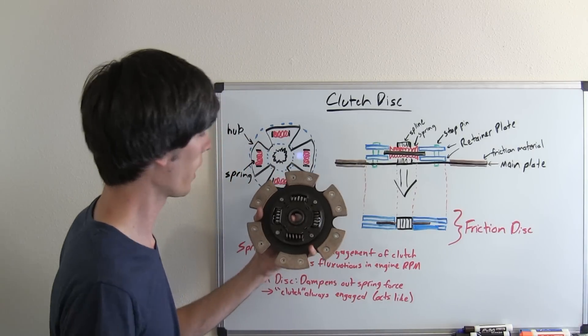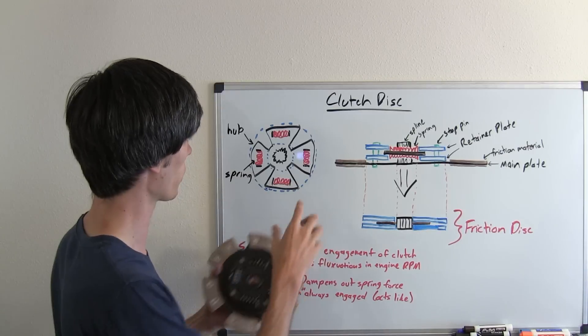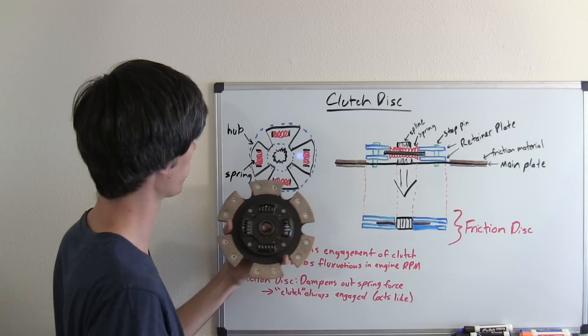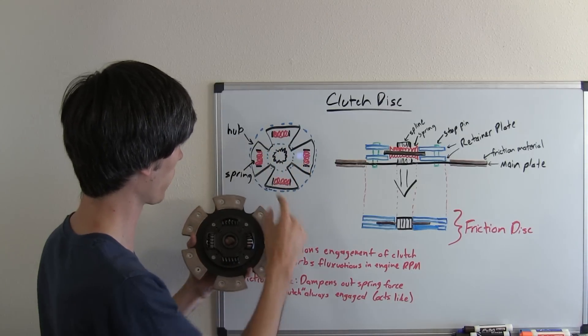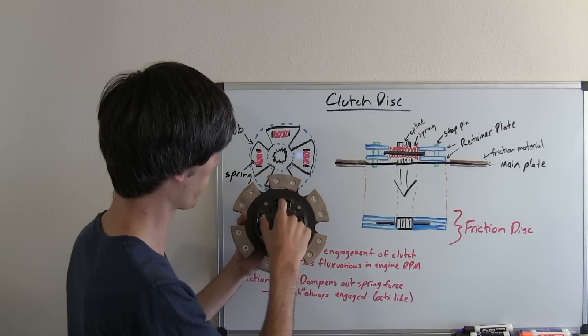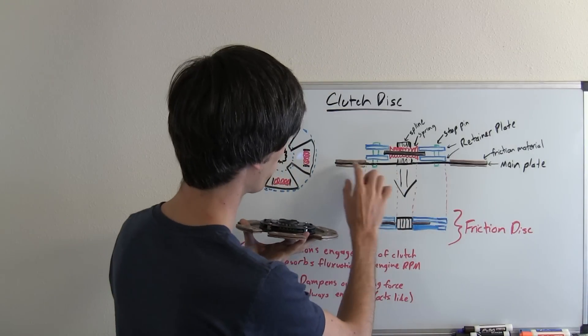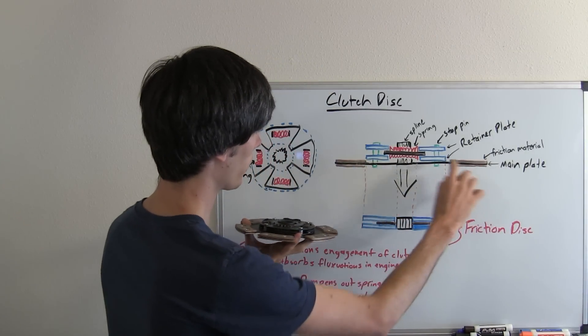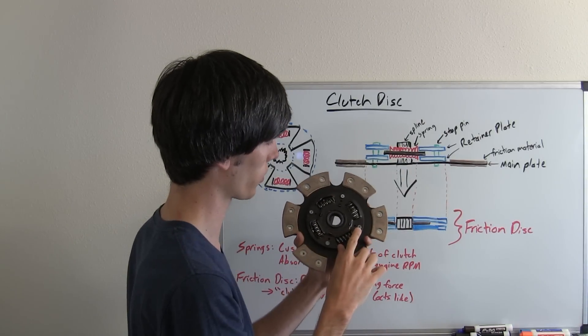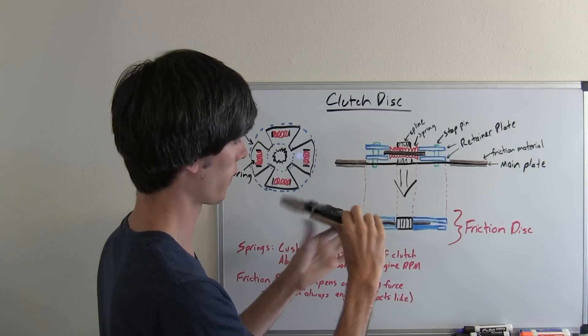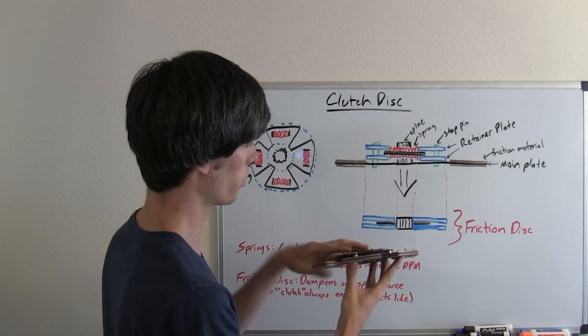So the clutch disc, as you can see here, has this internal spline and this spline is connected to a larger hub. The hub is beneath this brown piece that you see here, and basically within that hub you've got each of these four springs connected to the hub inside. Now if you look at this on the side here, what you've got is this plate here. This main plate is connected to these retainer plates by these little stop pins. These little silver pins right here are what are connecting this main plate, all of this where the friction material connects, to these retainer plates.